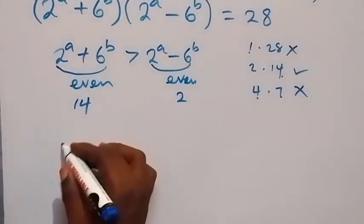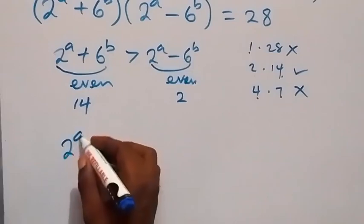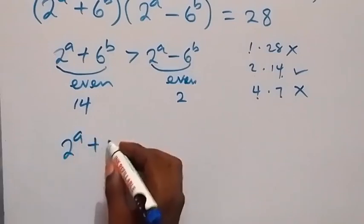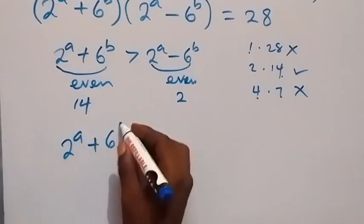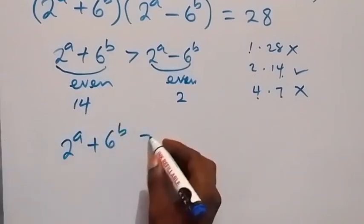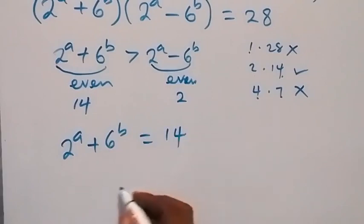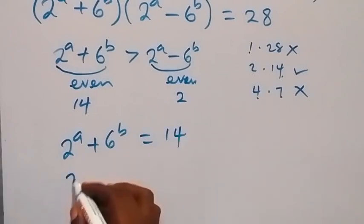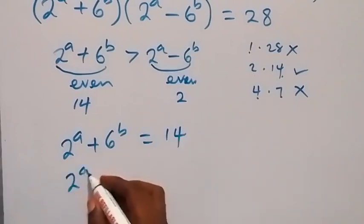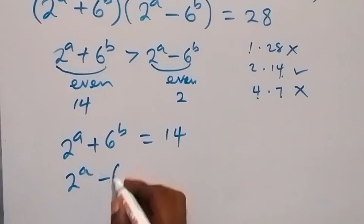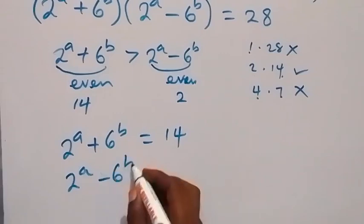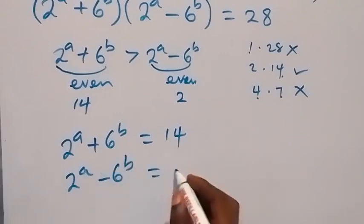So we can write: 2 raised to the power a plus 6 raised to the power b equals 14, and 2 raised to the power a minus 6 raised to the power b equals 2.